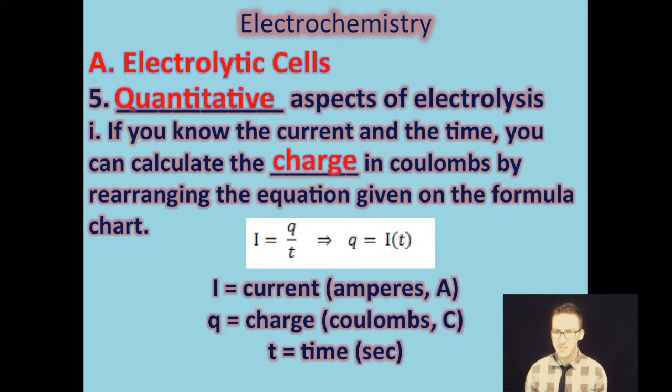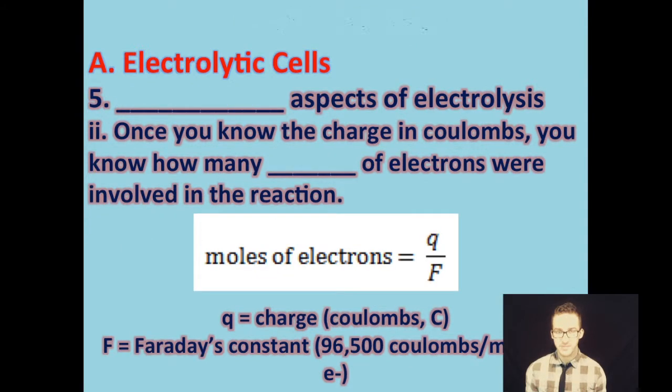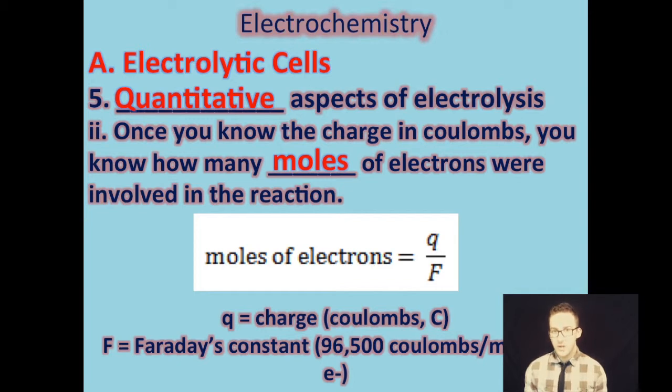Now, we're going to look at some quantitative aspects of electrolysis. Basically, we're going to start to apply some of the stoichiometry to electrochemistry. If you know the current and the time that you apply that current, you can calculate the charge in Coulombs by rearranging the equation that's given to you on the formula chart there where i is your current, q is your charge in Coulombs, and t is your time in seconds. Once you know the charge in Coulombs, you can determine how many moles of electrons were involved in the reaction simply by dividing by Faraday's constant or that 96,500 Coulombs per mole of electrons.